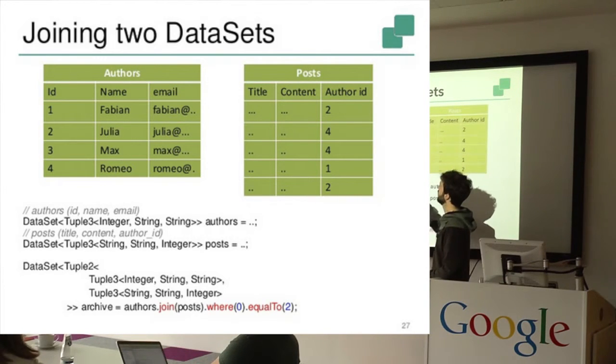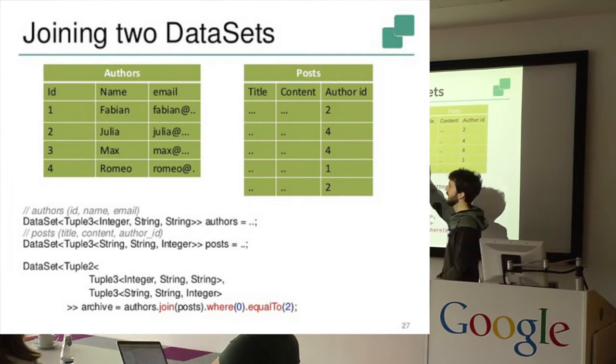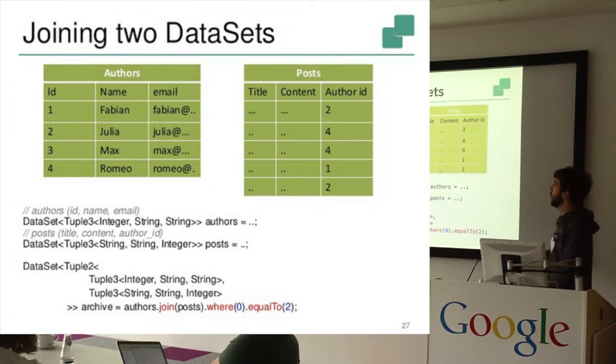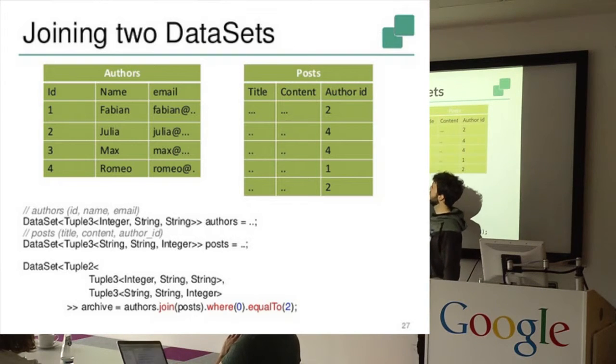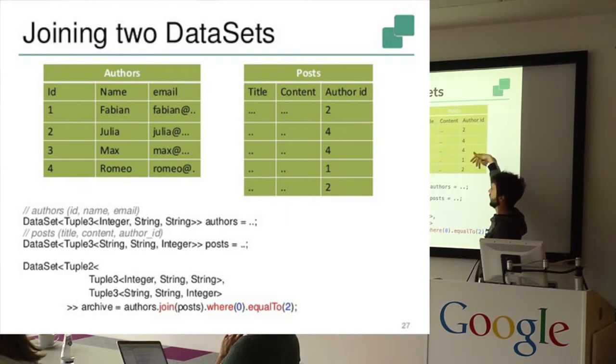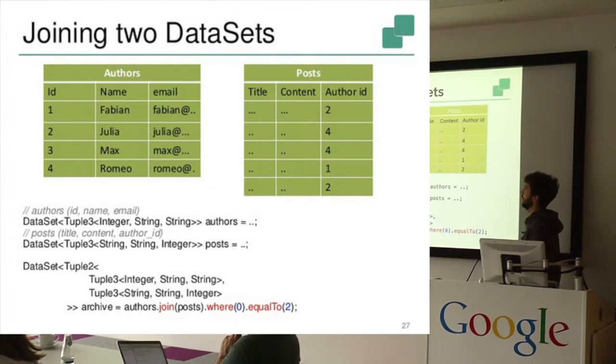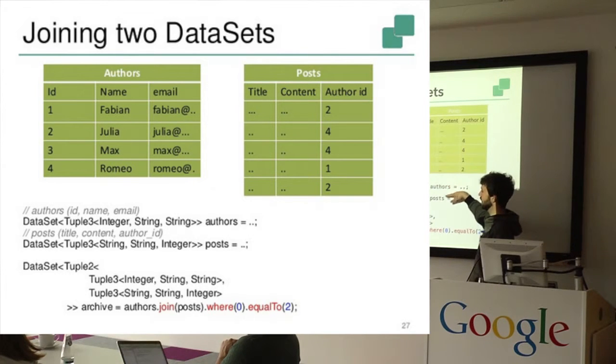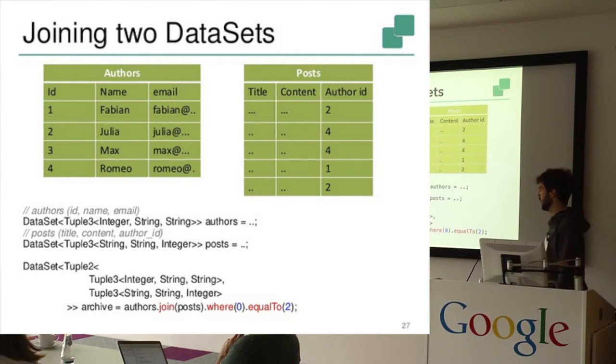So we typically have some fancy web application, for example, have some lists, a table of authors and a post table. And here in the author table we would store an ID for each author, and for each post someone makes we store the author ID. So we can represent these two tables using two data sets in Flink, with one, the authors with a tuple 3, and also the post with a tuple 3, which just contains this data.